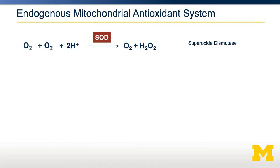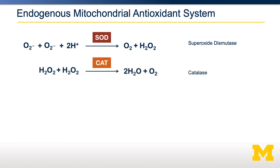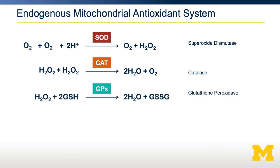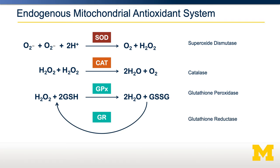The first of these systems is the endogenous mitochondrial antioxidant system. It can take reactive oxygen species such as superoxide anions or hydrogen peroxide and convert them to less toxic products such as molecular oxygen and water. The first enzyme is superoxide dismutase — it takes the superoxide anion and converts it into molecular oxygen and hydrogen peroxide. This hydrogen peroxide can then be reduced further to water using either catalase or glutathione peroxidase. Glutathione peroxidase works by recycling glutathione, cycling between its oxidized and reduced forms (GSH and GSSG), to help get rid of excess hydrogen peroxide.